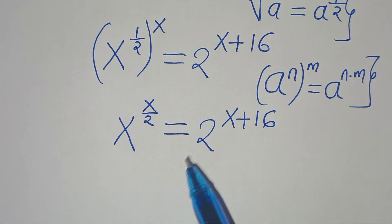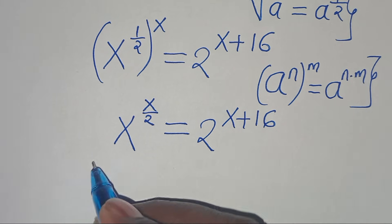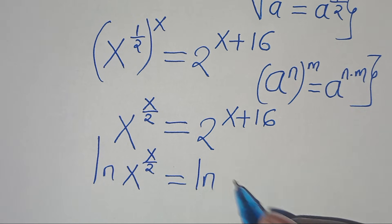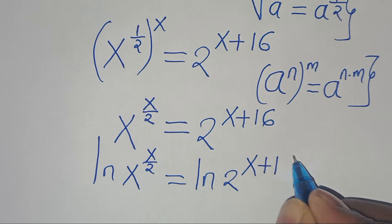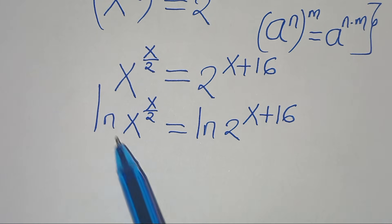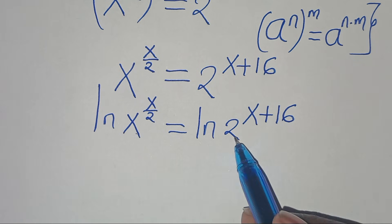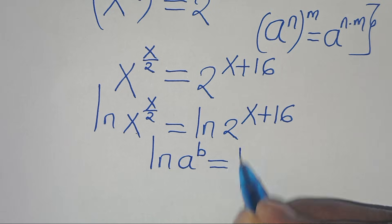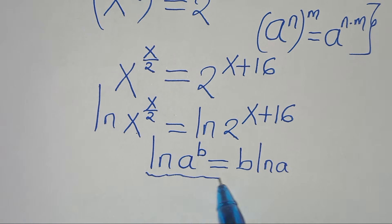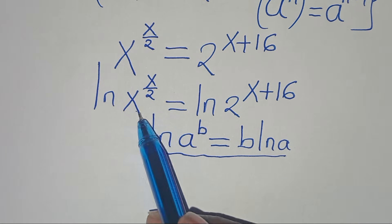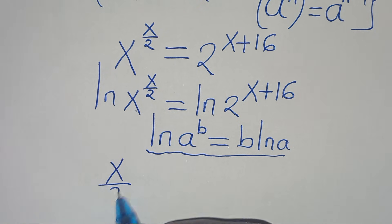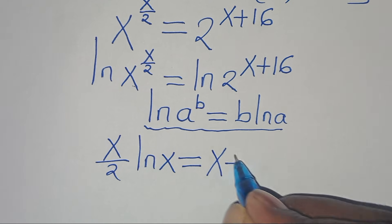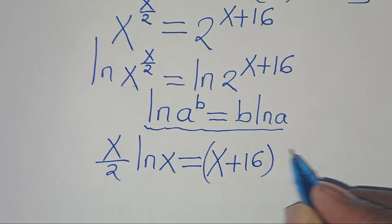The next step is to apply natural logarithm on both sides, such that we have ln of x to the power of x over 2, this is equal to the ln of 2 to the power of x plus 16. Now ln of a to the power of b can be expressed as b times ln of a. Applying this property, we have x over 2 times ln of x, this is equal to x plus 16 multiplied by ln of 2.